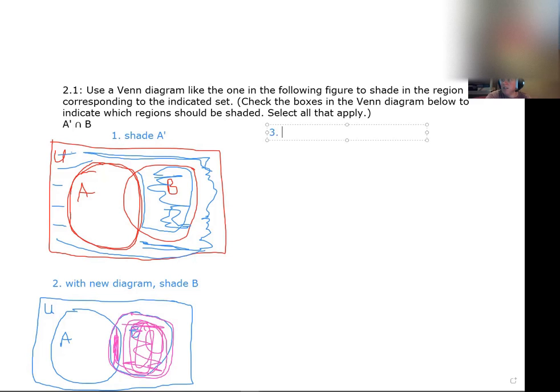And then my step three is to find my A prime B. A prime intersects with B. So I'm going to draw a third Venn diagram.